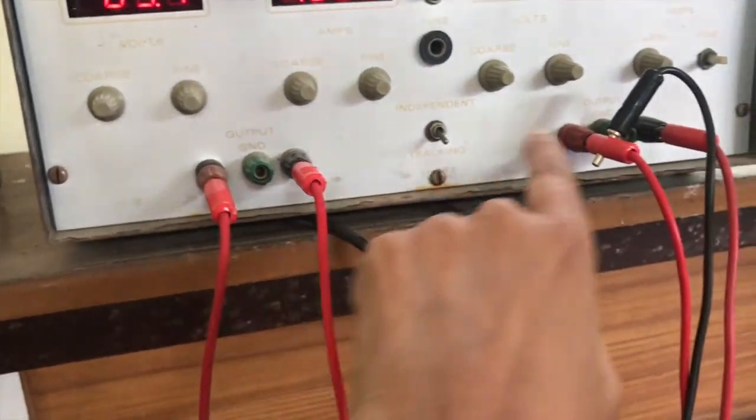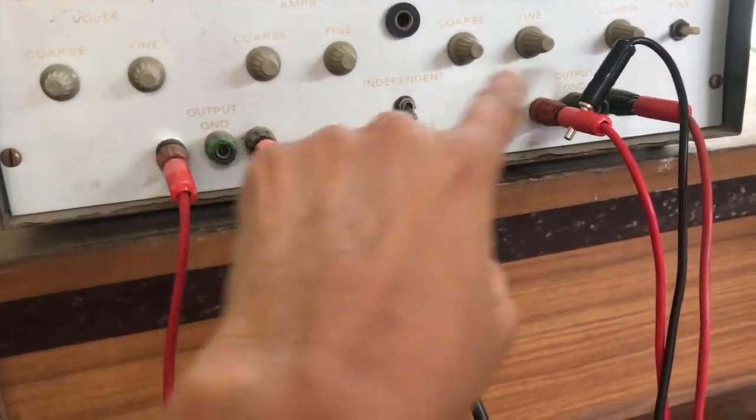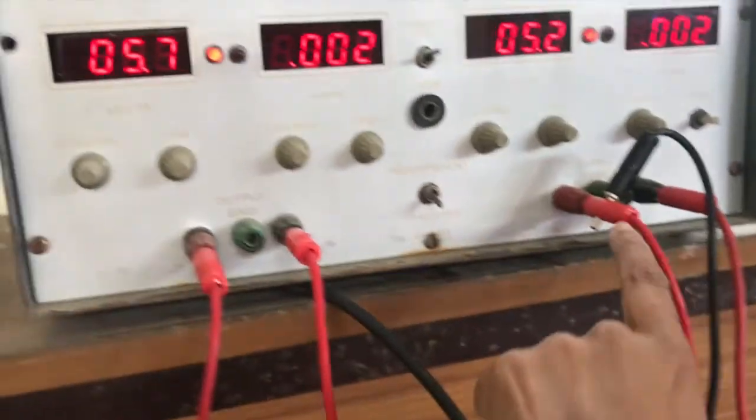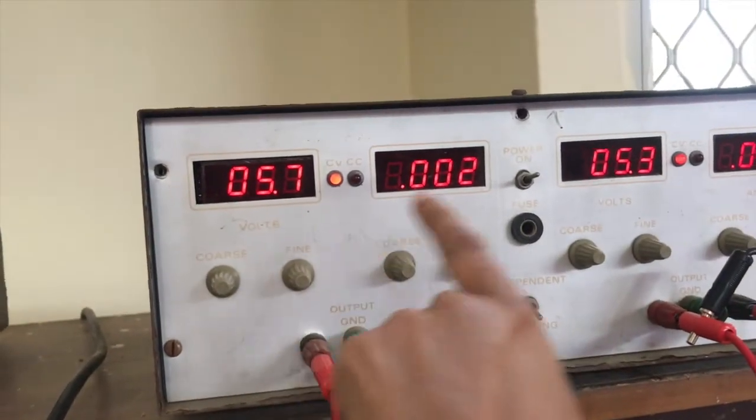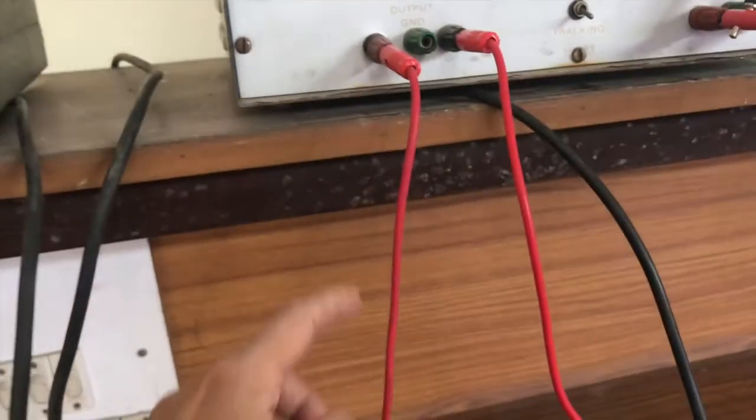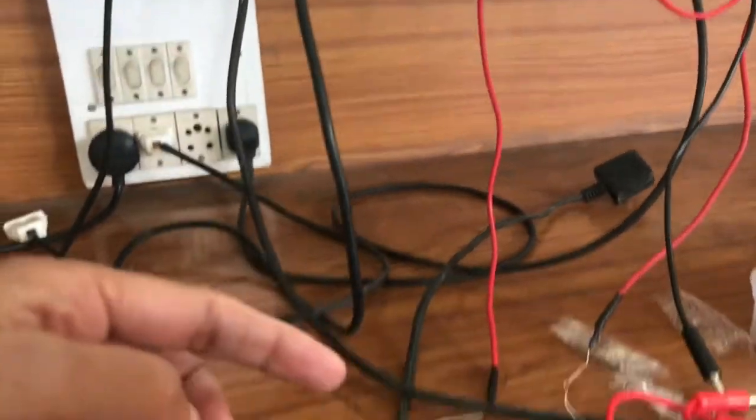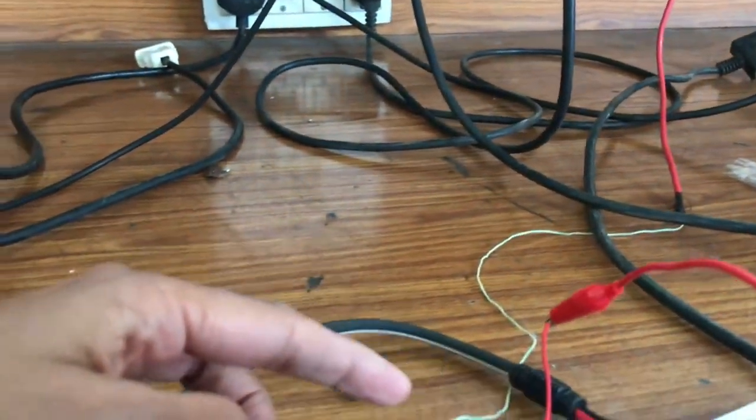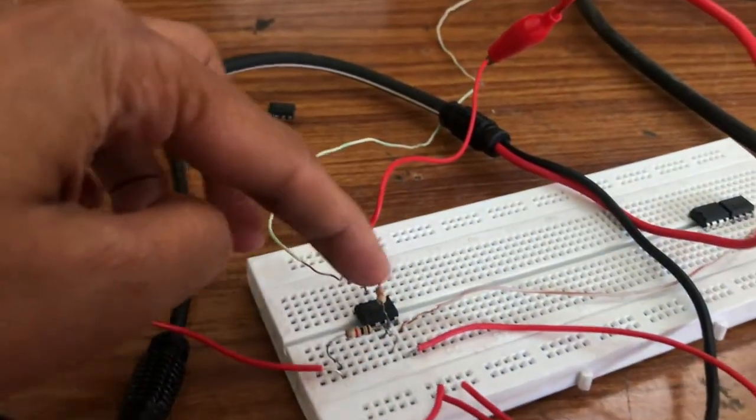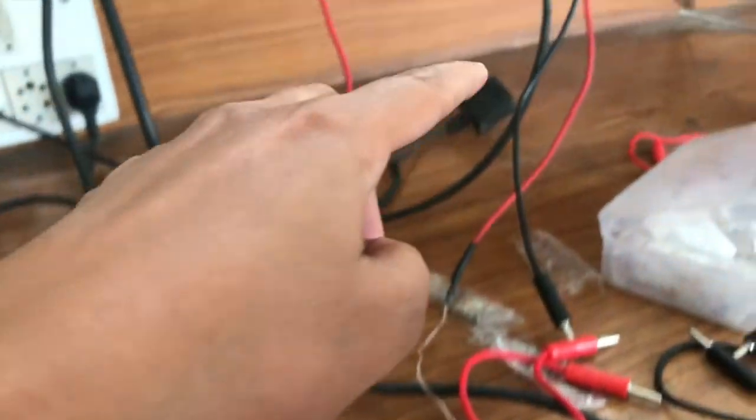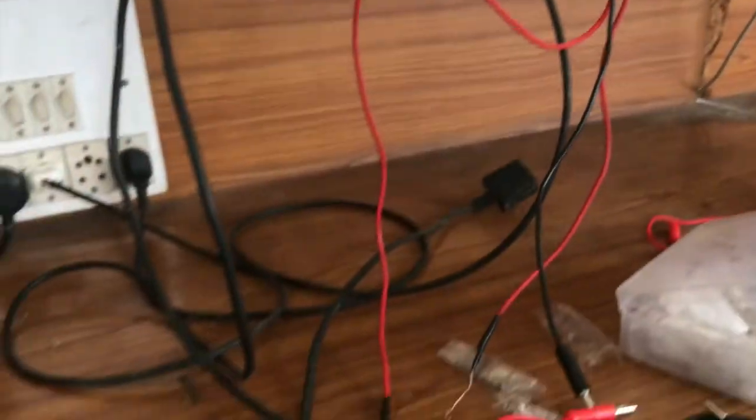This is the positive supply. The negative end is grounded to the positive end of the other supply to form the ground. It is put on the tracking mode, so both the voltages are same. This positive supply is connected to pin number seven. You can see here and pin number four is connected to the negative supply.